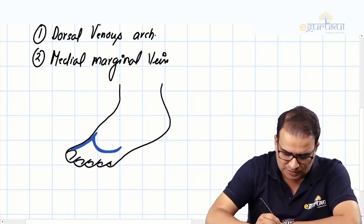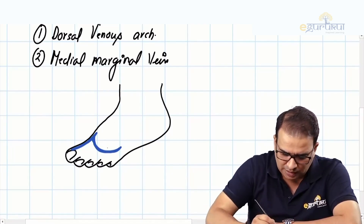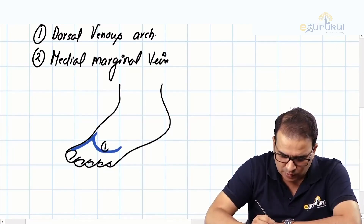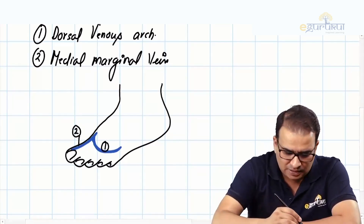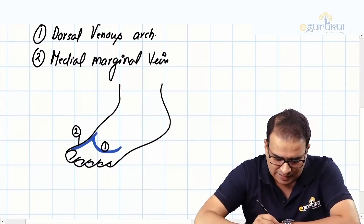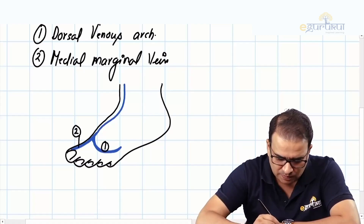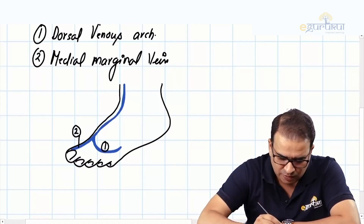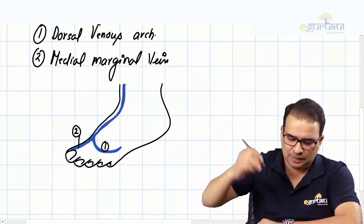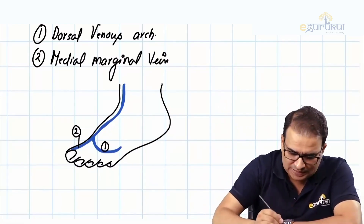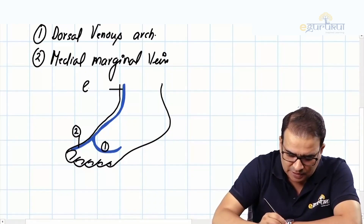Number one is the dorsal venous arch, and number two is the medial marginal vein. When these two veins unite, they give rise to the great saphenous vein, which runs on the medial side of the foot, on the medial side of the ankle, on the medial side of the leg, and continues going upward.